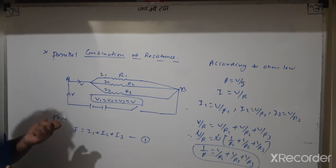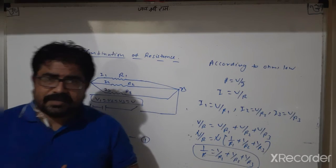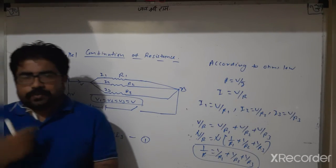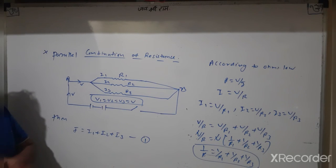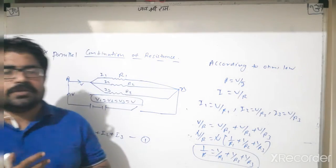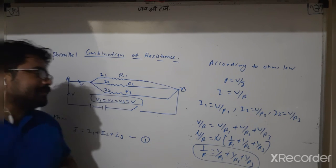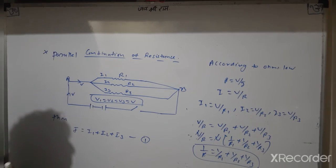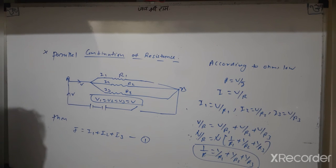The difference between series and parallel: in series combination, electric current flows the same but electric potential is different, so V = V1 + V2 + V3. In parallel combination, electric potential flows the same but electric current is different, so I = I1 + I2 + I3. Another difference: in series, if you cut one connection, the entire circuit is affected.